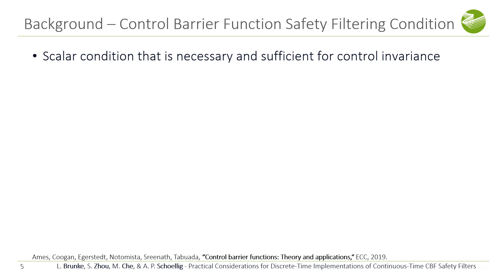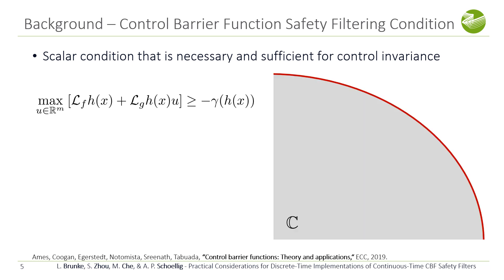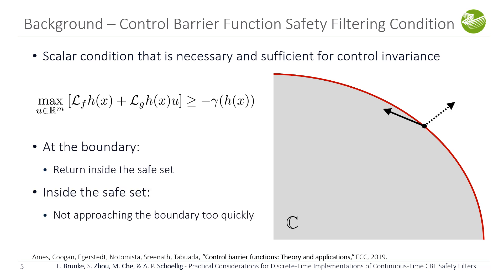Let's look at the CBF condition in more detail. The CBF condition is a scalar condition for control invariance. On the boundary, the goal is to return back into the safe set. And inside the safe set, you're almost free to do whatever you want as long as you don't approach the boundary too quickly.